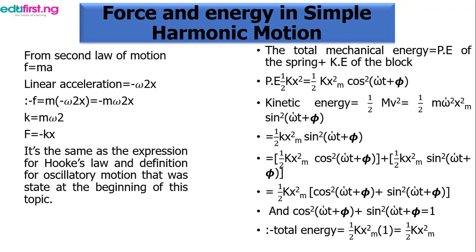Our potential energy equals half k x squared, and our kinetic energy equals half m v squared. The potential energy can be written as half k x squared cos squared(omega t + phi), and the kinetic energy as half m v squared, where velocity gives us half k x squared sin squared(omega t + phi). Since both terms share the coefficient half k x squared, and cos squared plus sin squared equals 1, the total energy equals half k x squared.